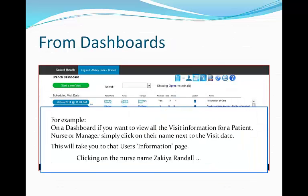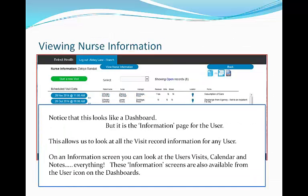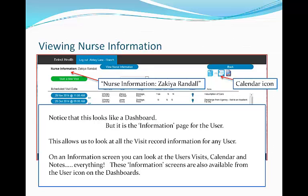For example, on a dashboard, if we want to view all the visit information for a patient, nurse, or manager, simply click on their name next to the visit date. This will take you to the user's information page. Again, this looks like a branch dashboard. When we click on the calendar icon, an overlay for the visits for this nurse will appear above their nurse information screen.